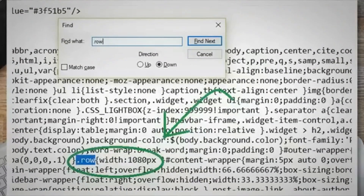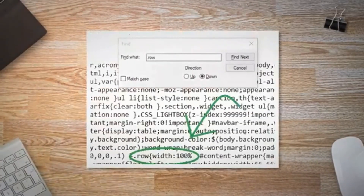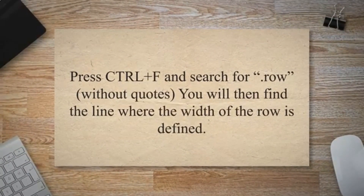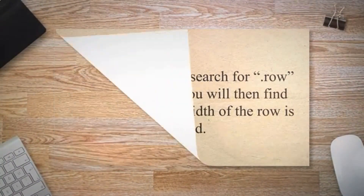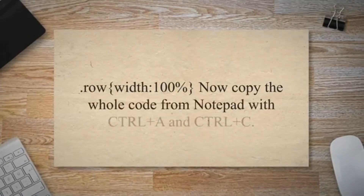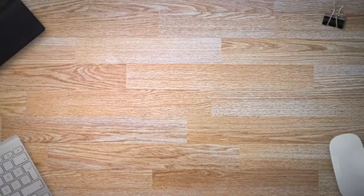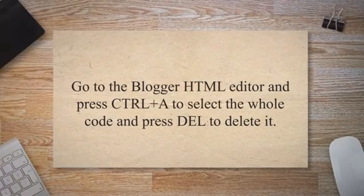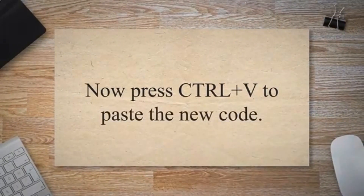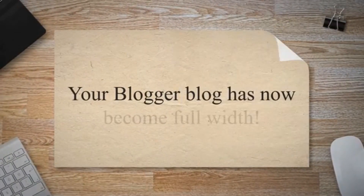Go to Blogger > Theme > Edit HTML and copy the full code using Ctrl+C. Open Notepad and paste the code. Press Ctrl+F and search for 'row' (without quotes). You will then find the line where the width of the row is defined. Replace the width value of the row with 100%, i.e., .row { width: 100%; }. Now copy the whole code from Notepad with Ctrl+A and Ctrl+C. Go to the Blogger HTML editor, press Ctrl+A to select all, press Delete to delete it, then press Ctrl+V to paste the new code and hit Save.